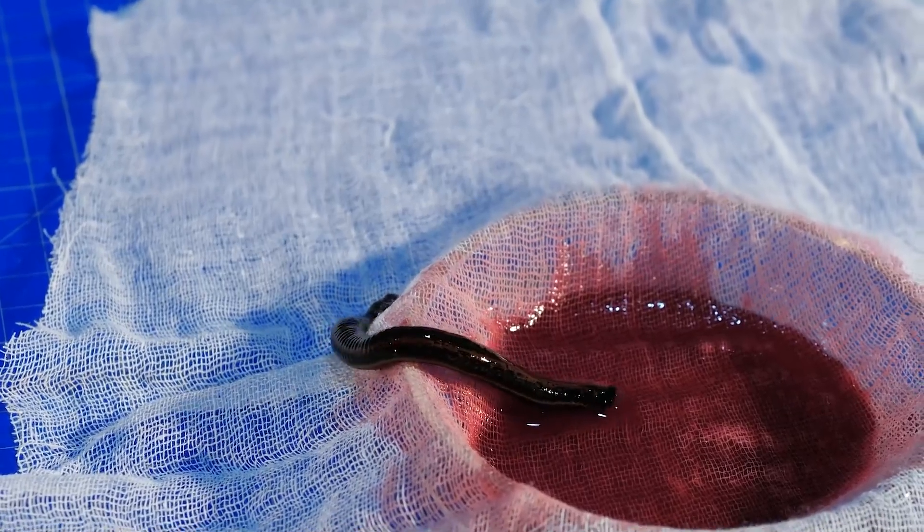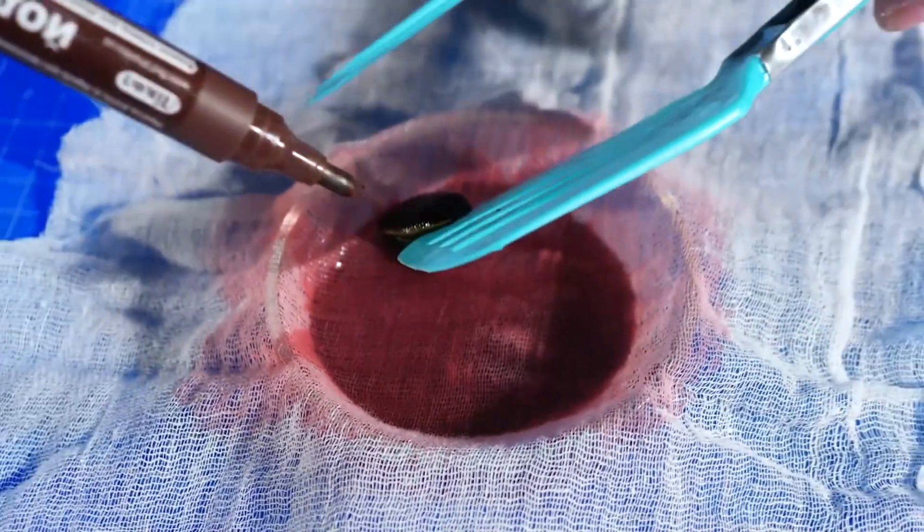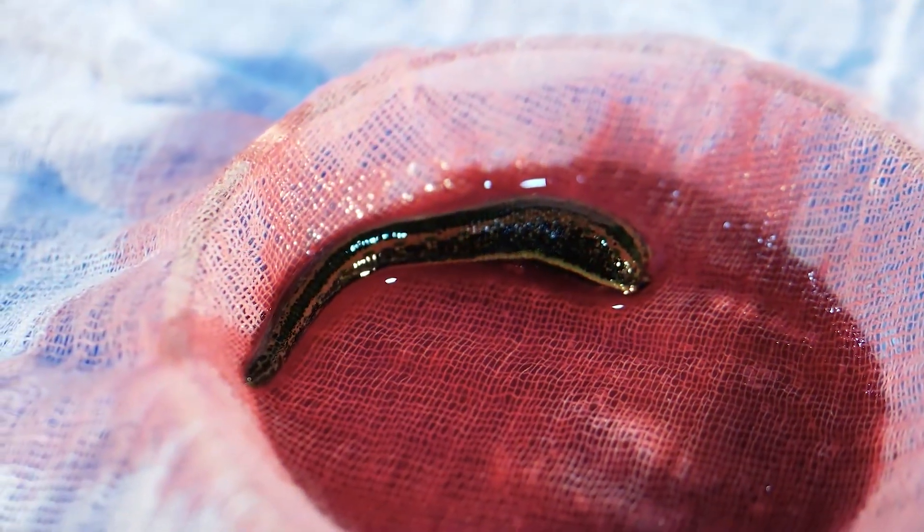As soon as we put the leech in a petri dish, it was clear that it did not want to drink. The bloodsucker is so uncomfortable with this that it just wants to get away. We've put it back a few times, but to no avail. Maybe it's just not hungry. Let's get another one. This one isn't drinking either.